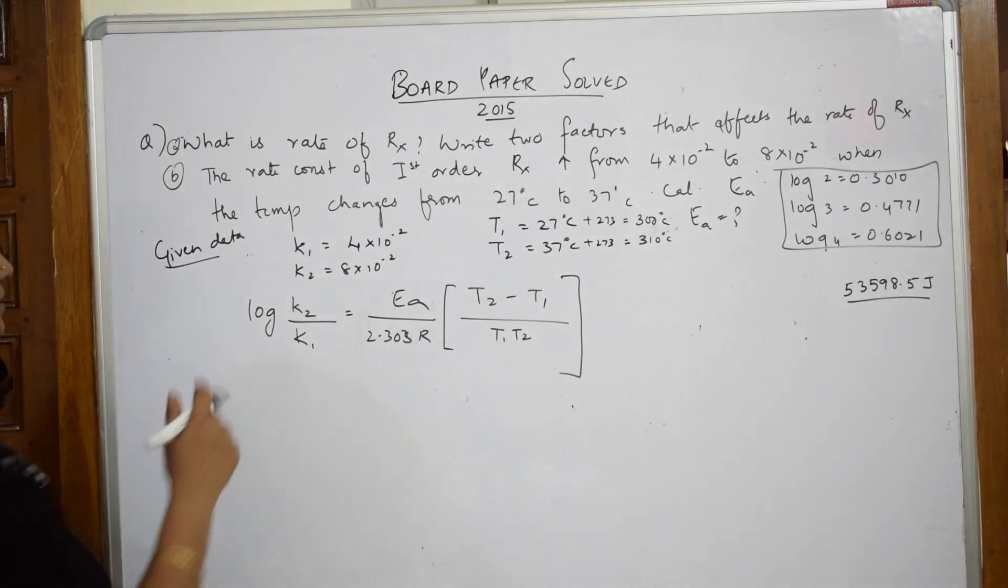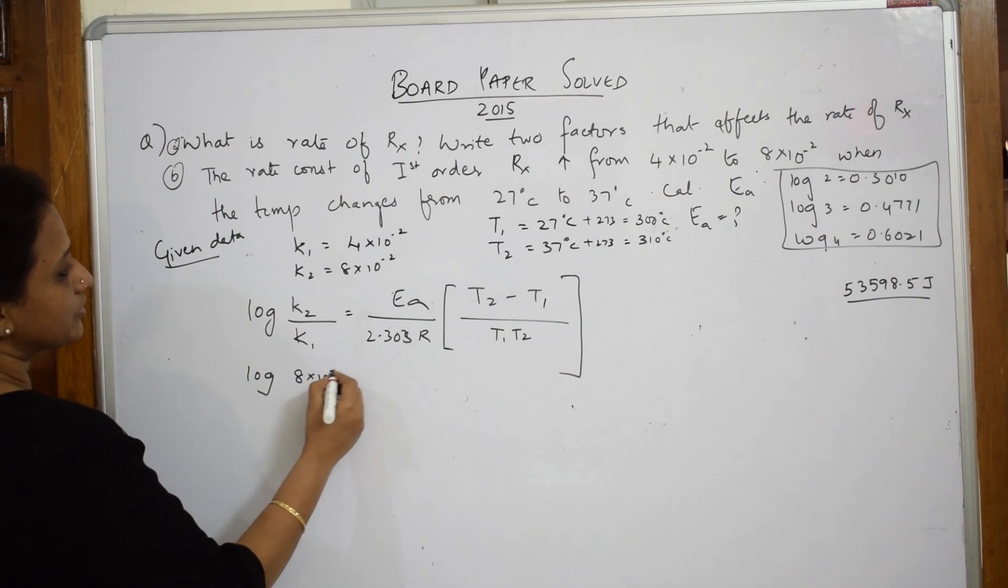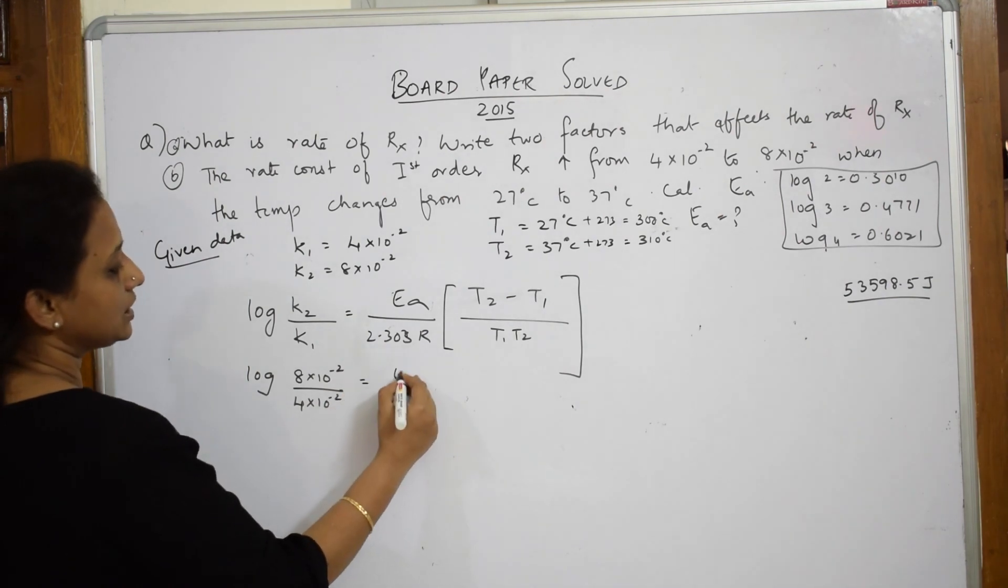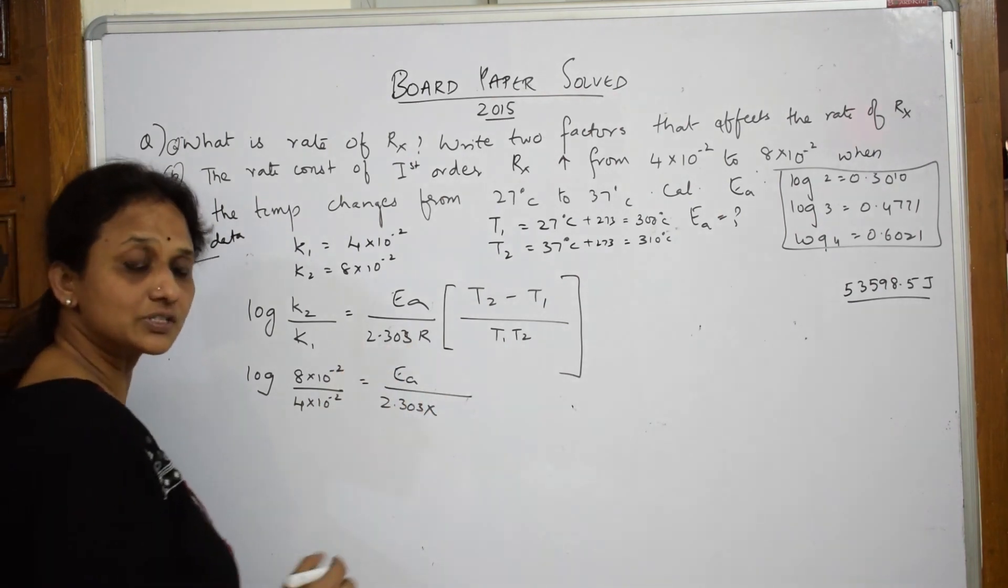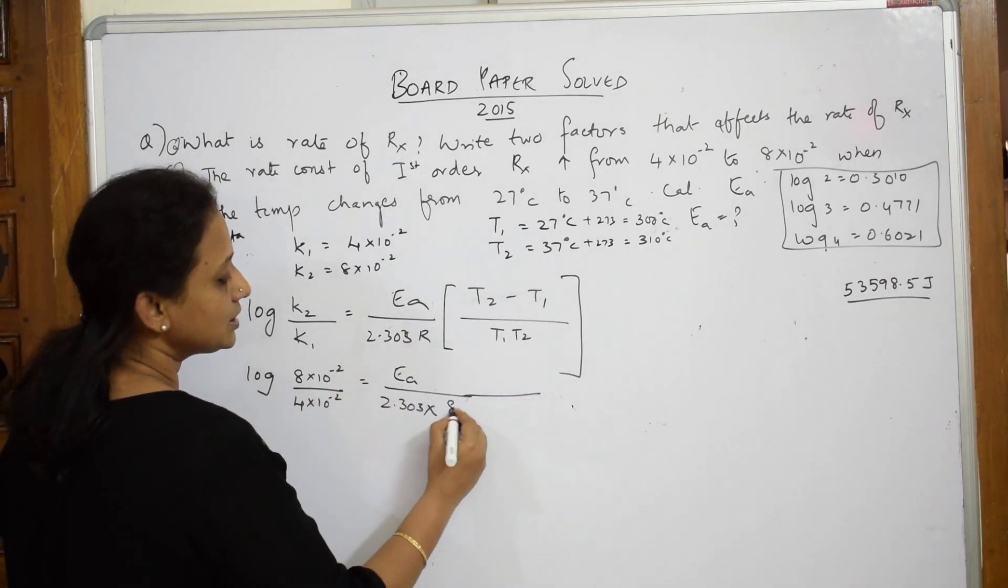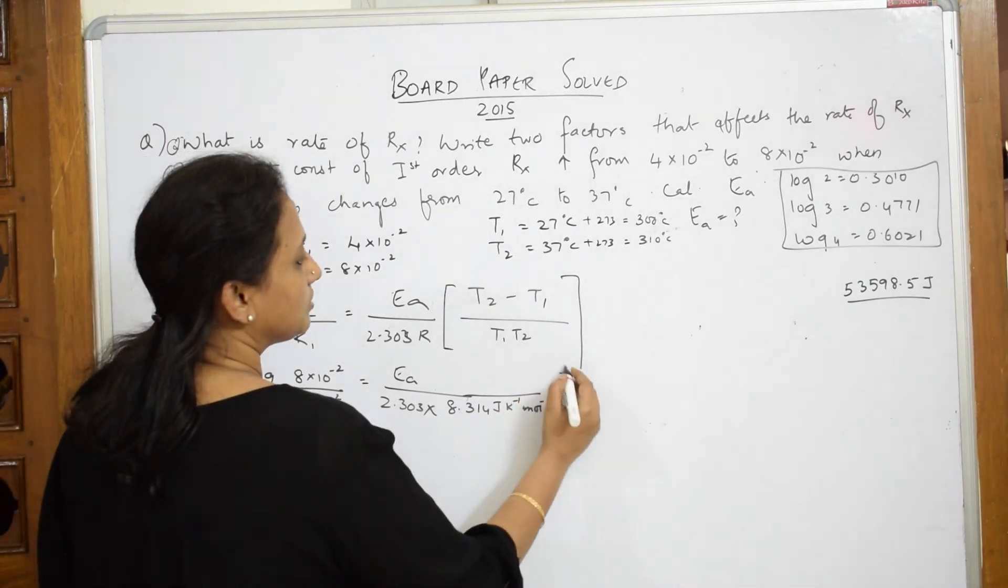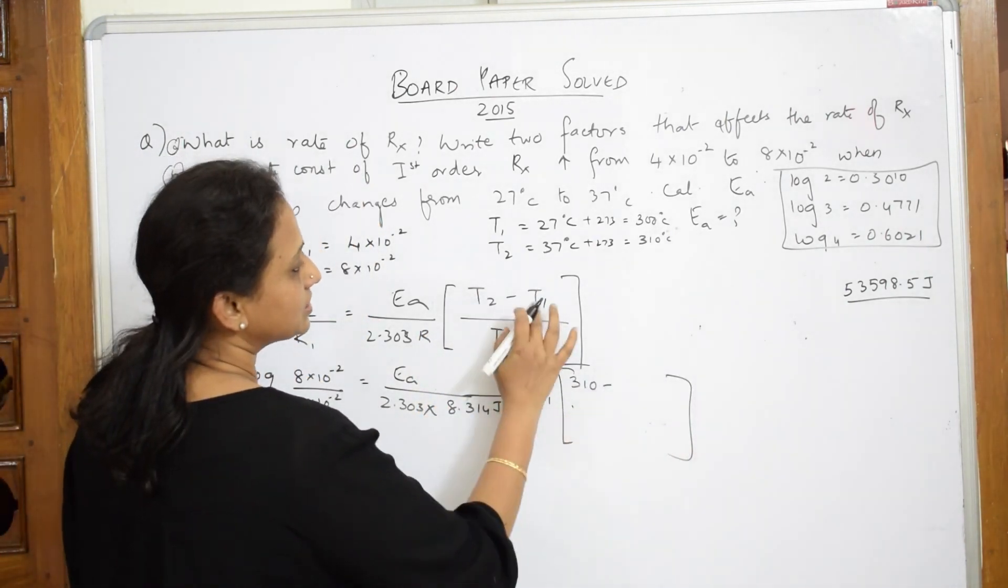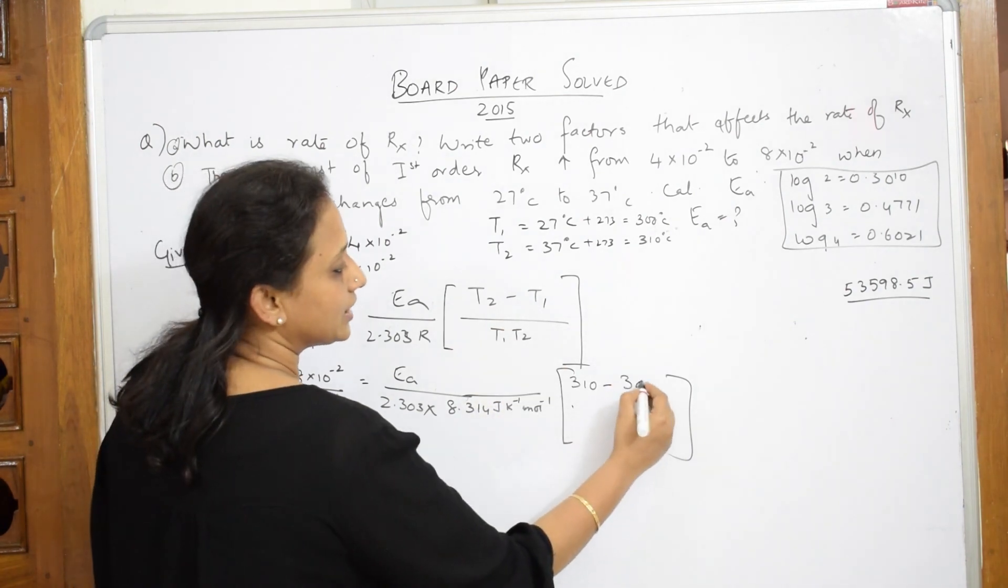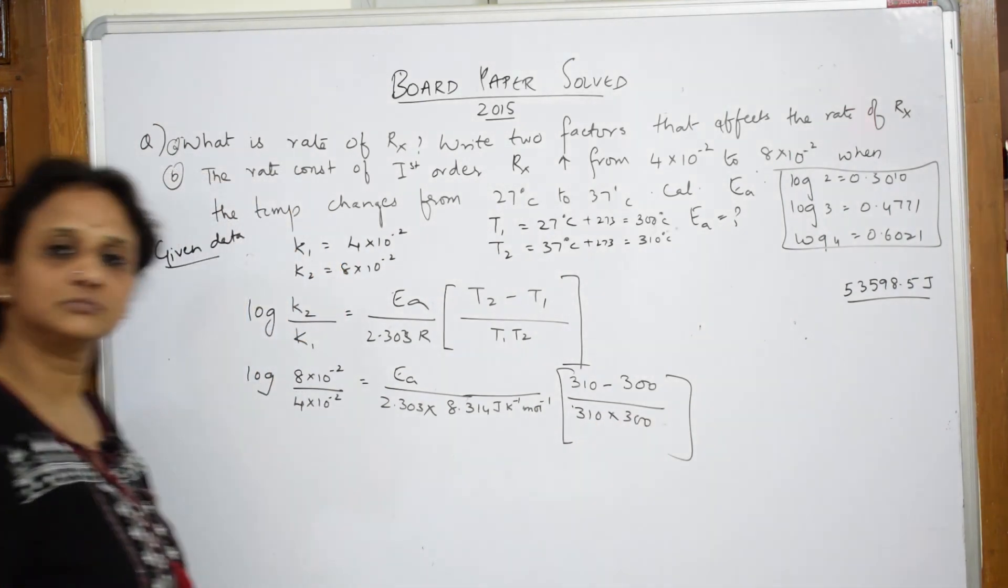Now apply the data from that. What is log K2? Your K2 is 8 into 10^-2. What is K1? 4 into 10^-2. Is equal to EA by 2.303. What is our gas constant? 8.314 Joule Kelvin inverse mole inverse. Put the bracket, close the bracket. What do we have? T2 is your 310 minus your T1 is 300 divided by 310 into 300. Simple.